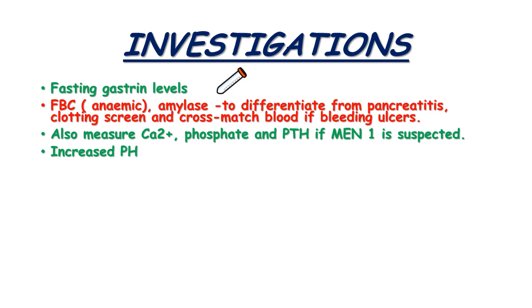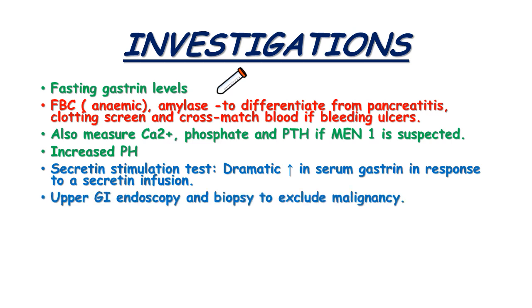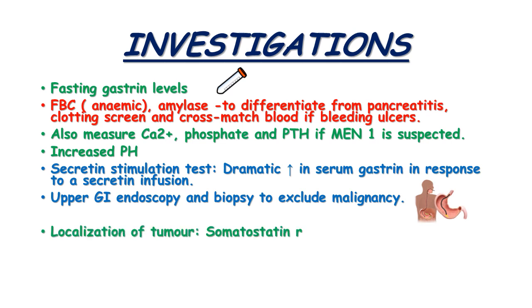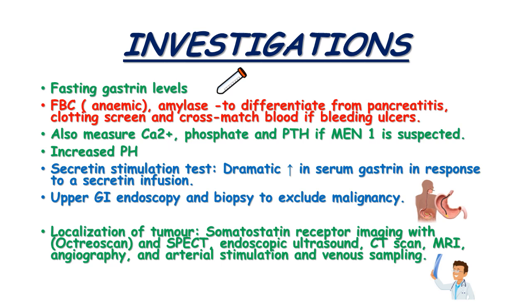Increased gastric pH is seen. The secretin stimulation test will show a dramatic increase in serum gastrin in response to secretin infusion. Upper GI endoscopy and biopsy are performed to exclude malignancy. Tumor localization involves somatostatin receptor imaging with octreotide scan and SPECT, endoscopic ultrasound, CT scan, MRI, angiography, and arterial stimulation with venous sampling.